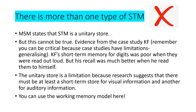A limitation is that the multi-store model states short-term memory is a unitary store, but evidence shows there is more than one type of short-term memory. Looking at KF — the motorcycle accident case — his short-term memory for digits was poor when they were read out loud, but recall was much better when he read them to himself. This tells us there are different short-term memory stores. Research suggests there must be at least one for visual information and one for auditory information, and here we can apply the working memory model.